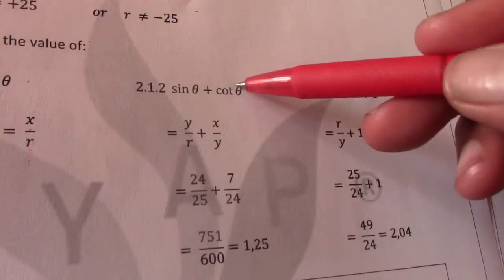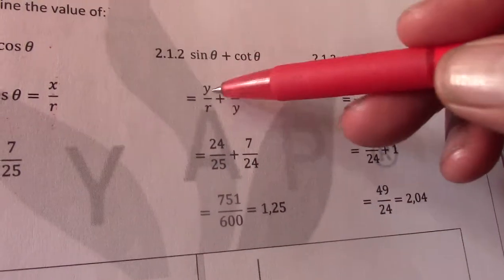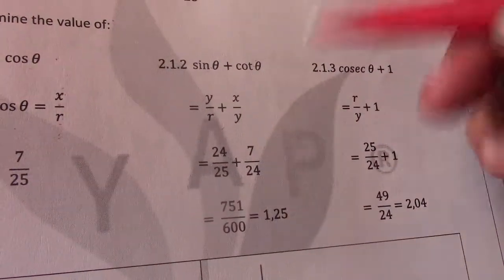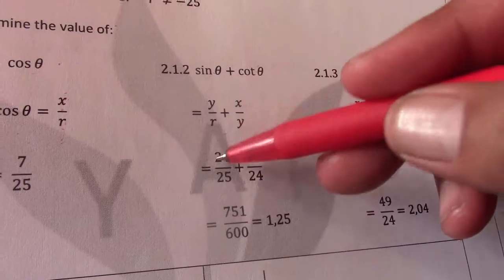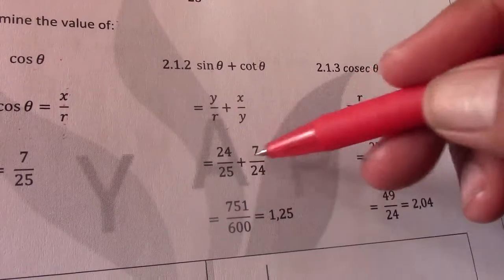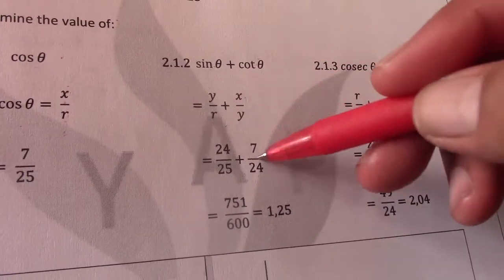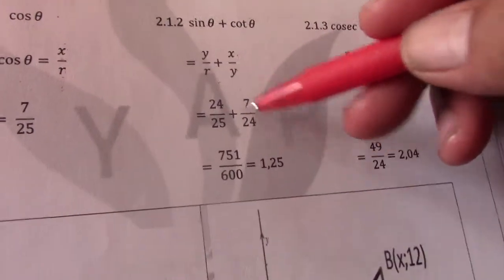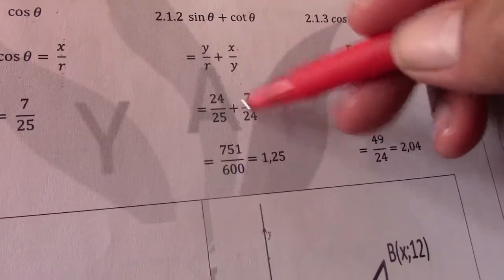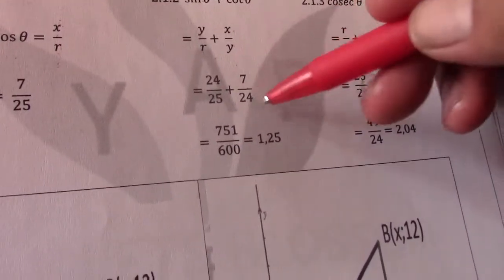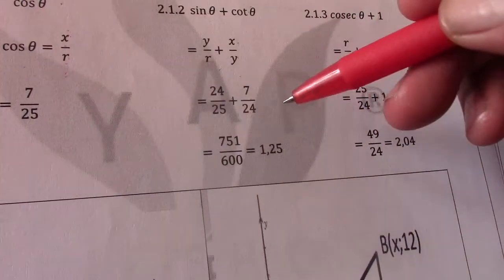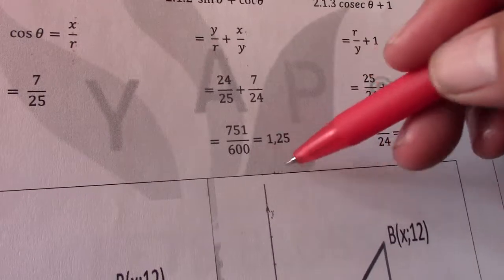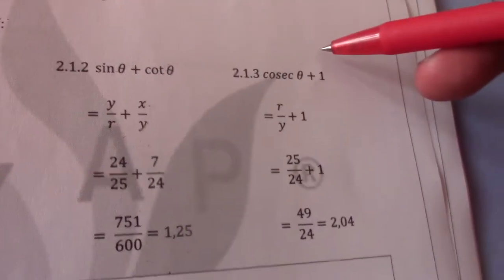If I do sin theta plus cot theta I need to know sin theta is Y over R. cot theta is X over Y. Flip tan theta around. So my Y value is 24. My R value is 25. X value is 7. My Y value is 24. Generally it says simplify without the use of a calculator but I have used the calculator in this case. Later I will show you how we do it without the calculator. Added I got 751 over 600 which gives me 1.25.